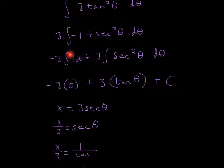The integral of 1 d theta is just theta, so that term gives negative 3 theta. The integral of sec²θ is tan theta, because the derivative of tan theta is sec²θ. So the result is negative 3 theta plus 3 tan theta plus C — don't forget the plus C.